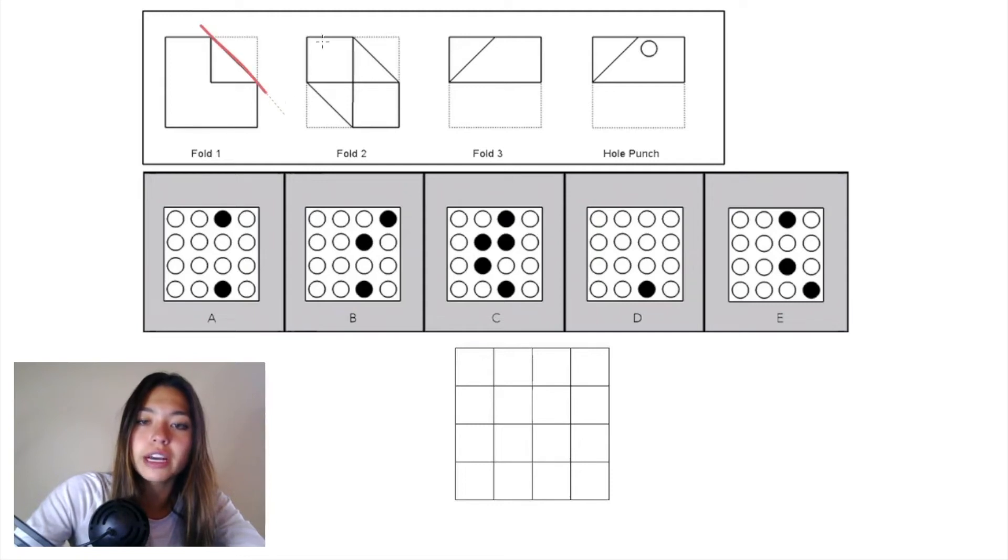Starting with fold one, we have a diagonal plane and we're folding this top right triangle down into this triangle right here.